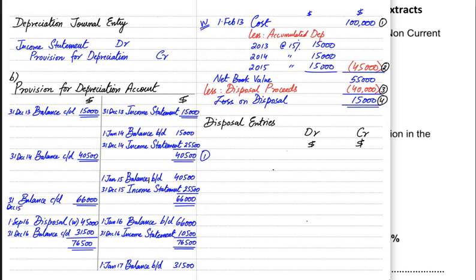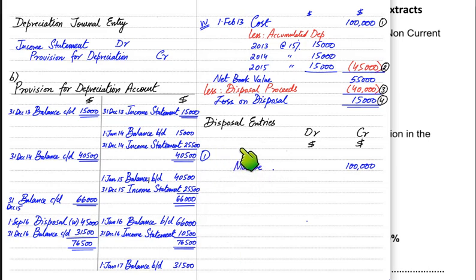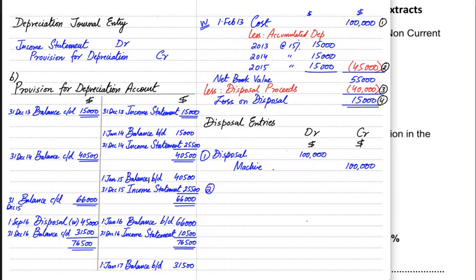The first entry is for the original cost. We need to remove the original cost of the asset from our books because the asset has been disposed of. The machine or any non-current asset is debit in nature. Whenever we sell the machine, the machine account is credited by the original cost — 100,000 — and the disposal account is debited on the opposite side.